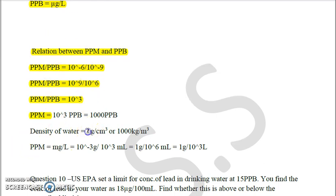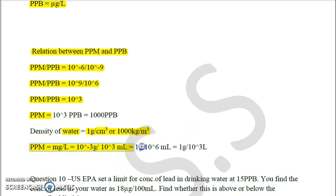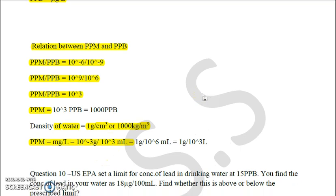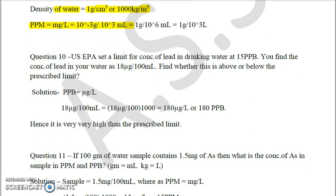ppm is milligram per liter, which can be written as 10^-3 gram per 10^3 mL, which comes out to 1 gram per 10^6 mL or 1 gram per 10^3 liter. Now let us understand this concept with the help of a numerical, which will make our concept stronger and help us better understand ppm and ppb.